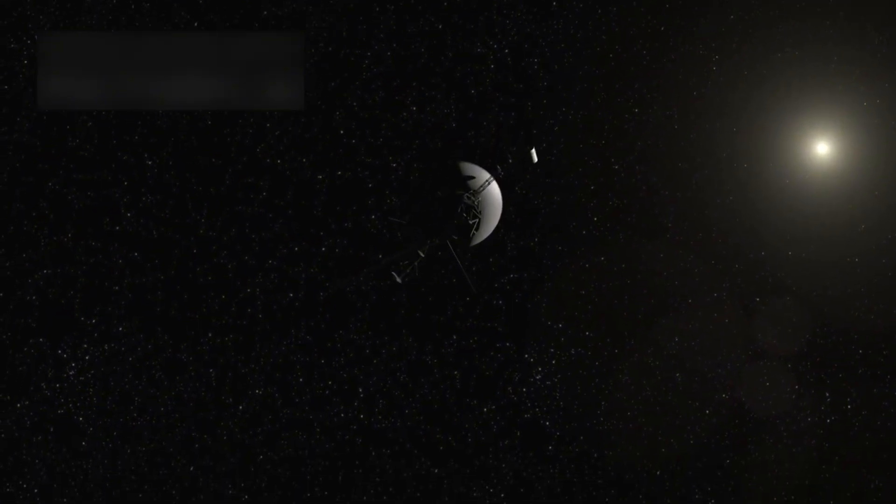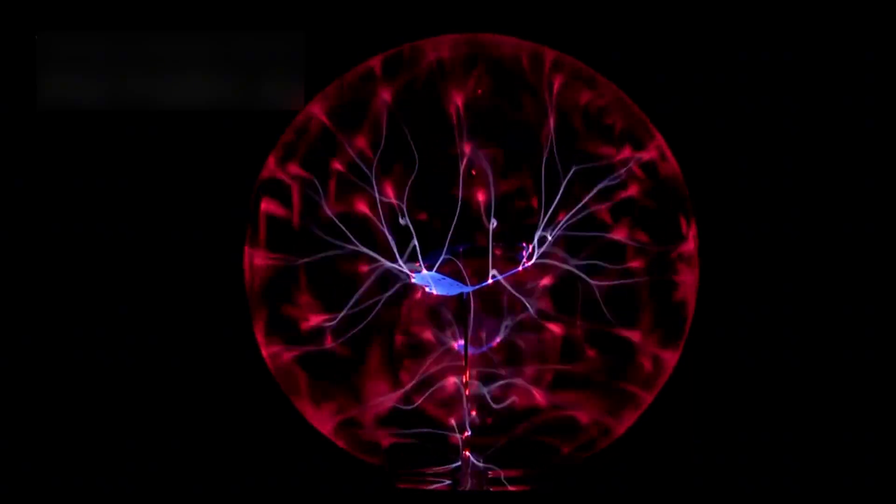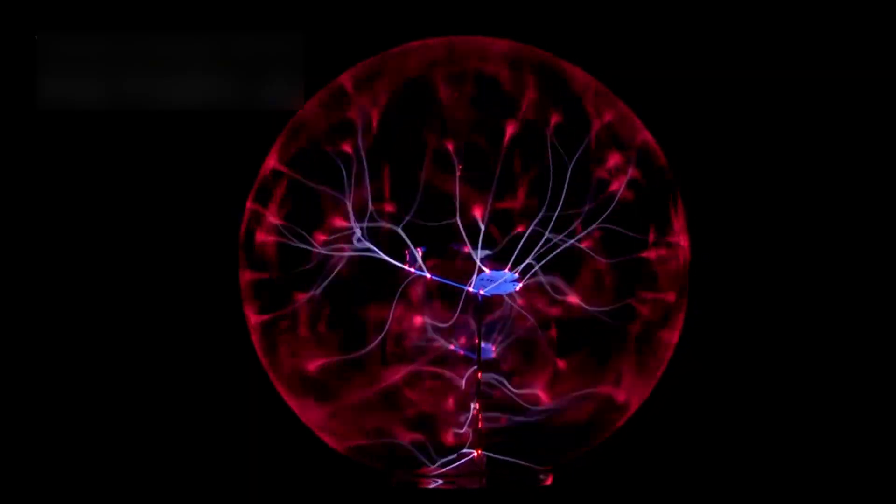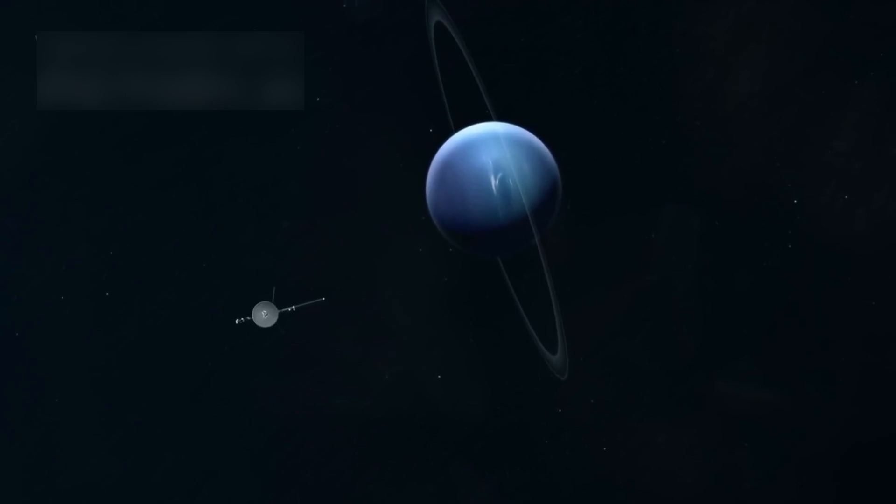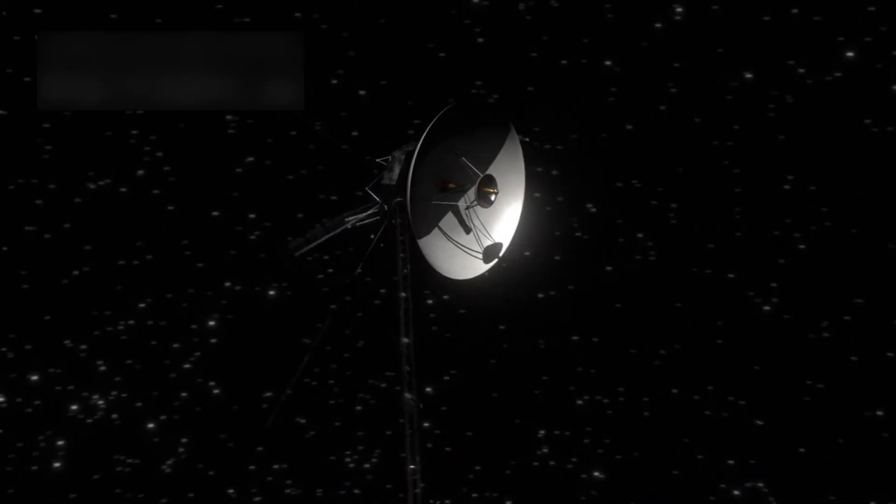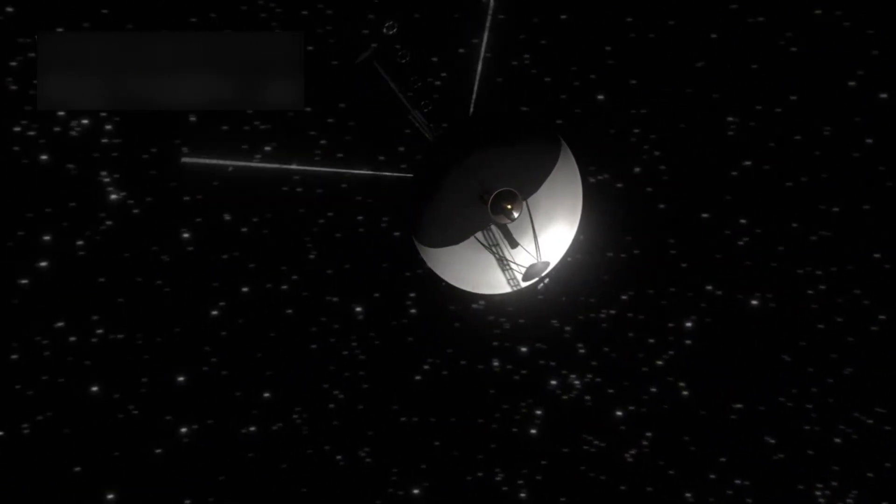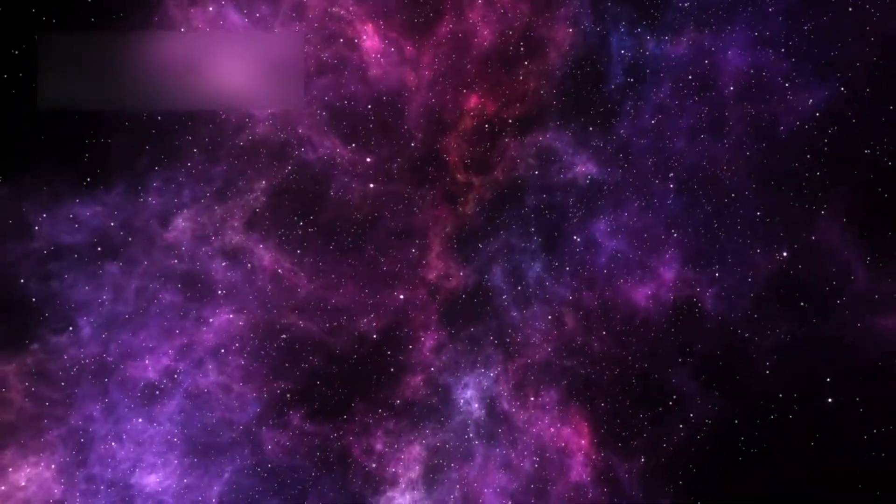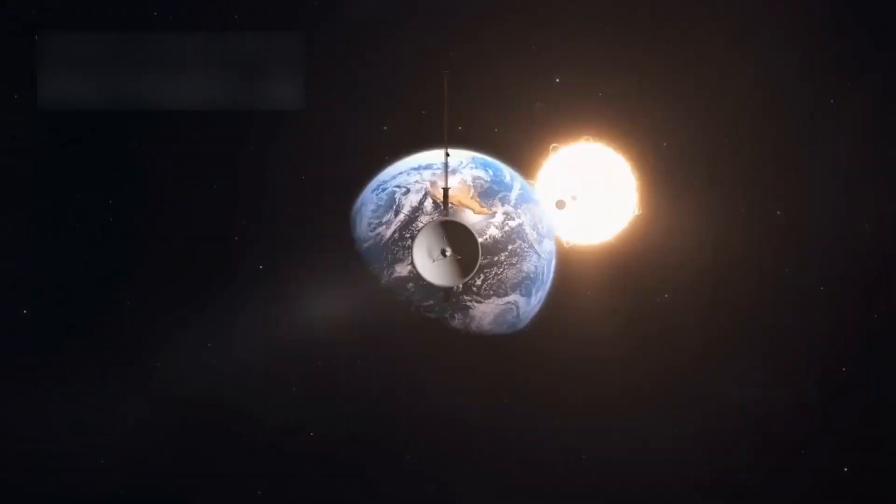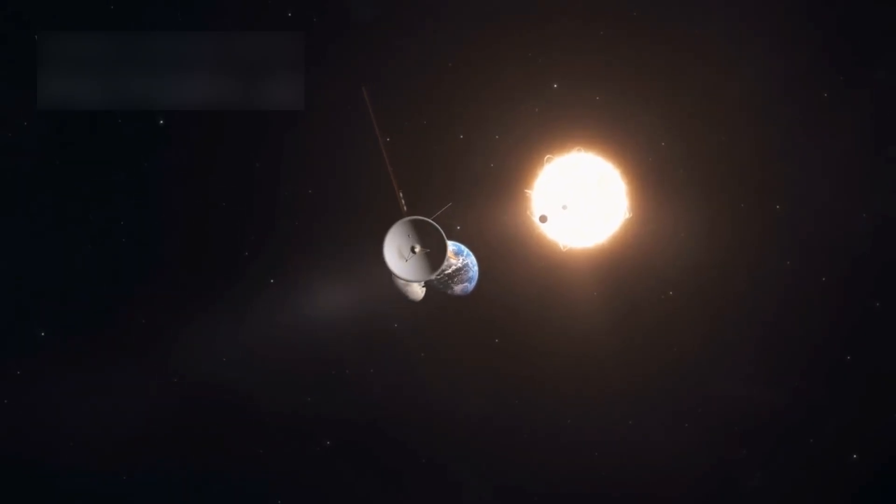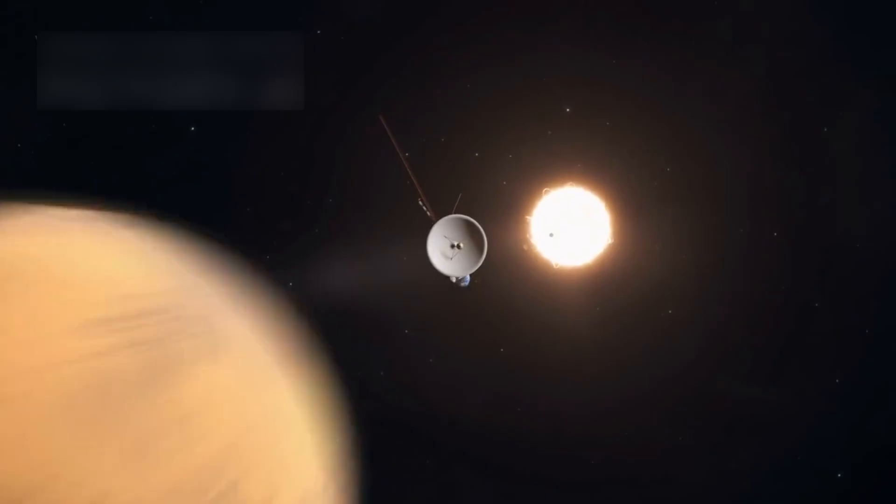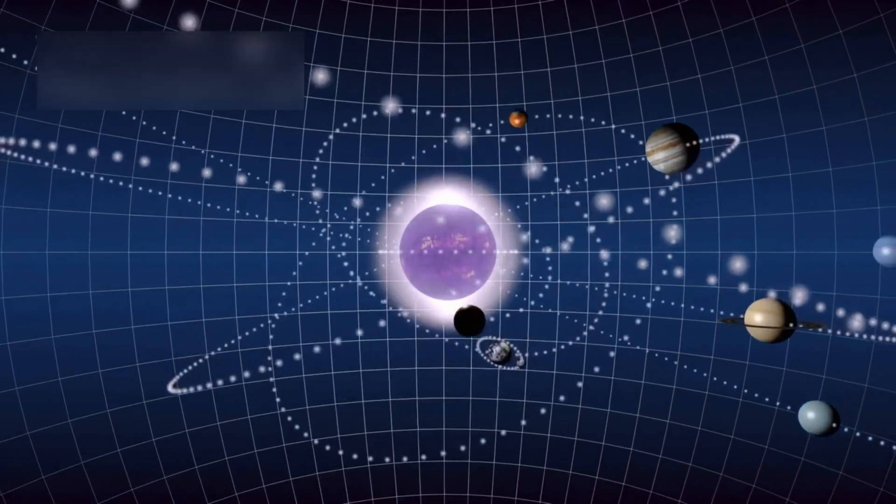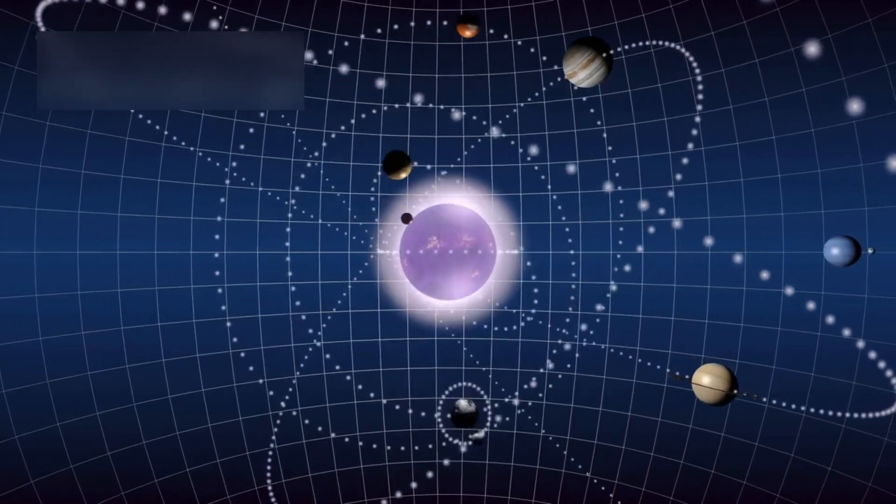Voyager 1 reminds us of what's possible when we dare to ask the big questions and build the tools to chase the answers. Its journey is still unfolding, and so are the mysteries it uncovers. From strange plasma behavior to the possibility of alien signals, every detail matters. What lies ahead in Voyager 1's path? Possibly new regions of interstellar space, even denser clouds of particles, or unexplored magnetic zones that could hold answers to age-old questions. Perhaps even evidence of cosmic strings, which some physicists believe are leftover energy strands from the early universe. There is even a theory among some researchers that Voyager 1 might eventually pass near a rogue planet, a planet without a star. These mysterious objects float freely in the galaxy and could hold secrets about how planets form and evolve without solar heat or light.